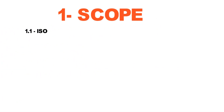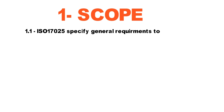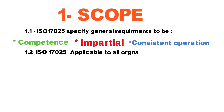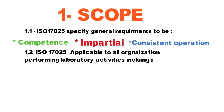Number one is the scope. Clause 1.1 states that ISO 17025 has specific requirements which are competence, impartiality, and consistent operation. Clause 1.2 states that ISO 17025 is applicable to all organizations performing laboratory activities, including testing, calibration, sampling, and subsequent testing.